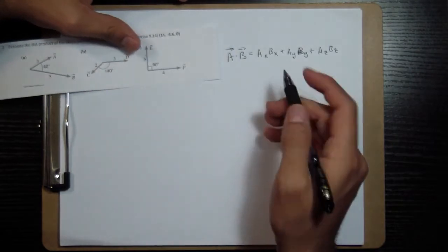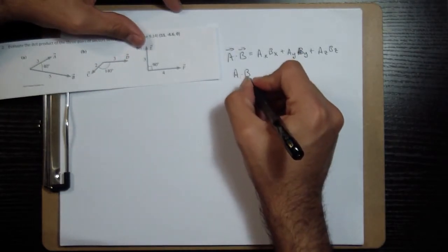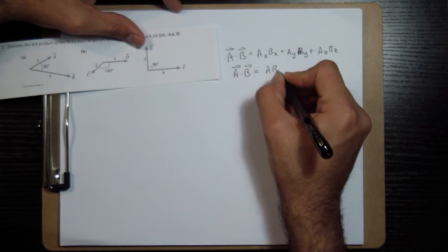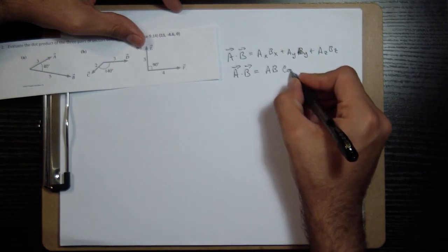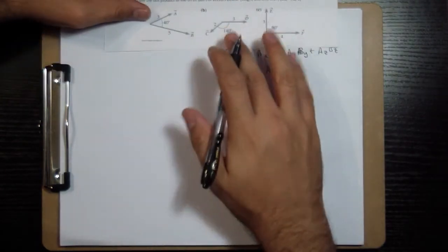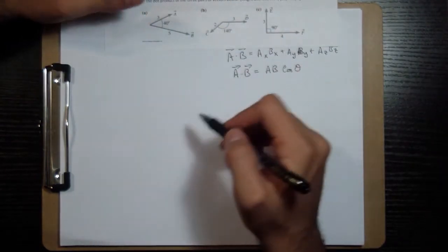So this is one of the equations for a dot product, but it's not the one we're gonna use, because there's another one that's the geometric definition, which is that the dot product equals the two magnitudes times the cosine of the angle in between them. And right here, they give us all angles.